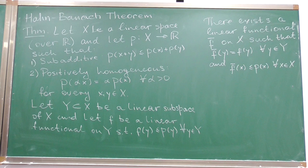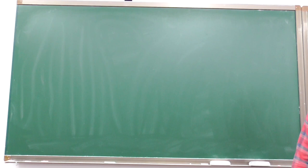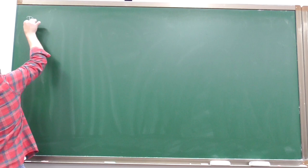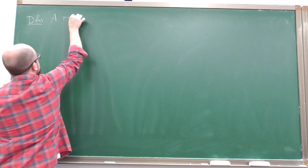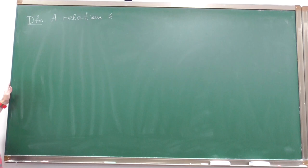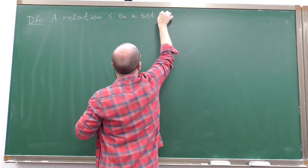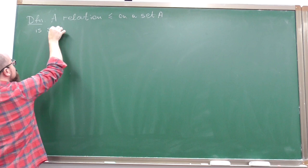Before we go to the proof, we need some auxiliary material on partially ordered sets. We have already discussed relations on sets, in particular equivalence relations. Now I will introduce one more specific type of relation, called the partial order. A relation on a set A — denoted with the ≤ symbol — is said to be a partial order if it satisfies certain properties.